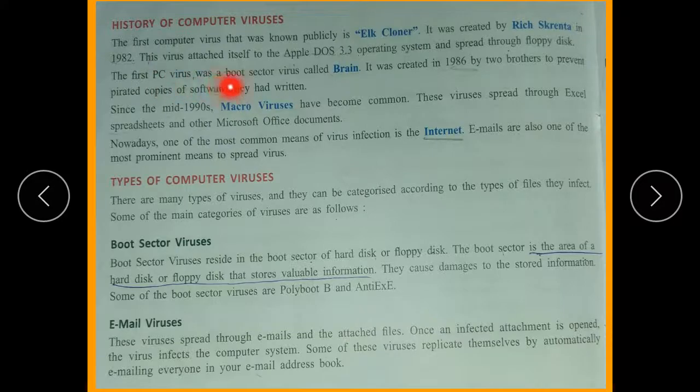The first PC virus was a boot sector virus called Brain. The first virus was a boot sector virus called Brain. It was created in 1986 by two brothers to prevent pirated copies of software they had written.